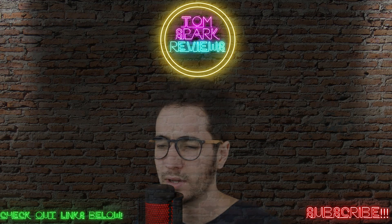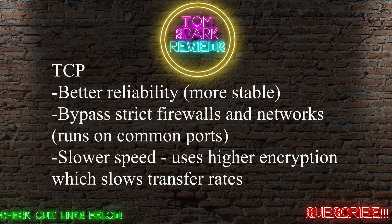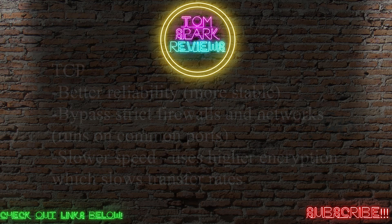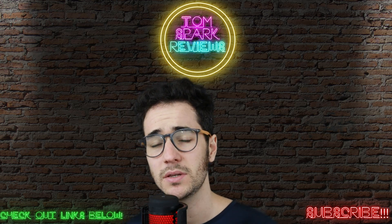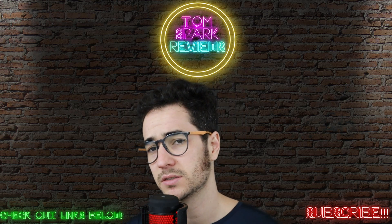Why is TCP more reliable than UDP? TCP VPN offers more stable connections as the protocol guarantees delivery of packets. It can also bypass firewalls, since TCP VPN tunnels aren't blocked as much as UDP. They run on common ports like 80 and 443, so TCP can sometimes bypass strict firewalls depending on where you are. UDP is more commonly blocked.